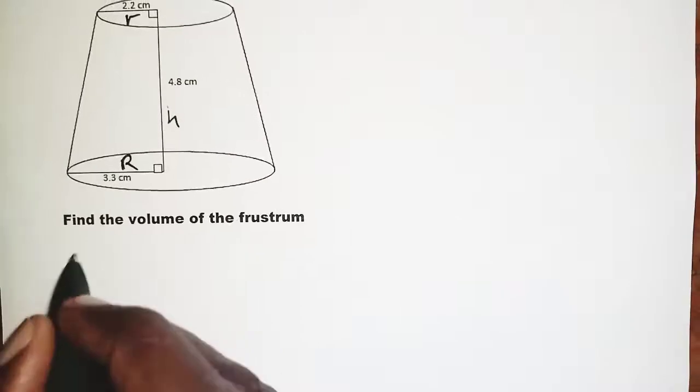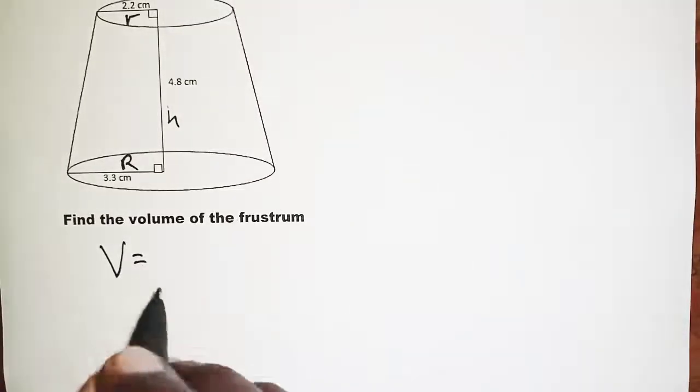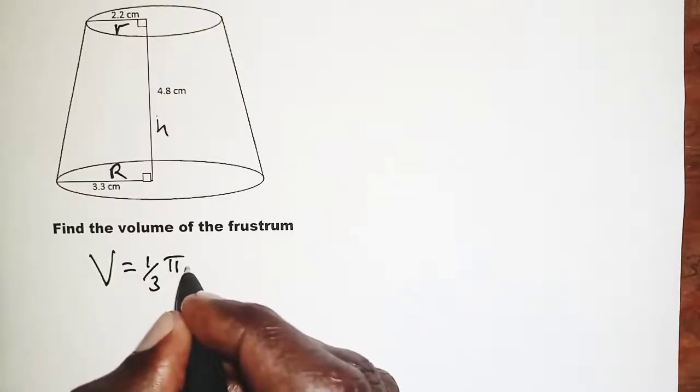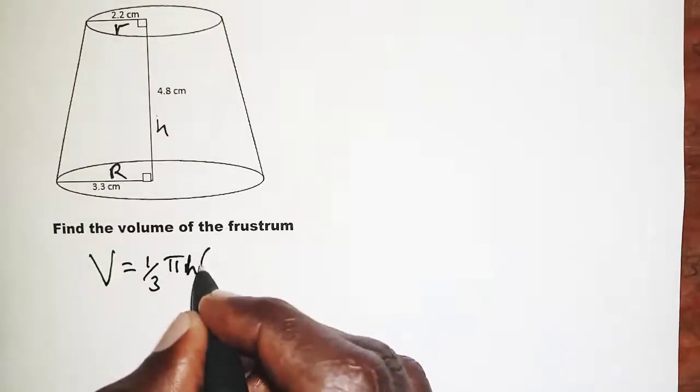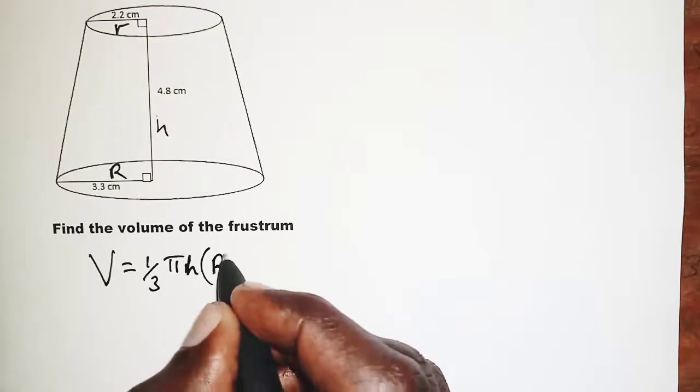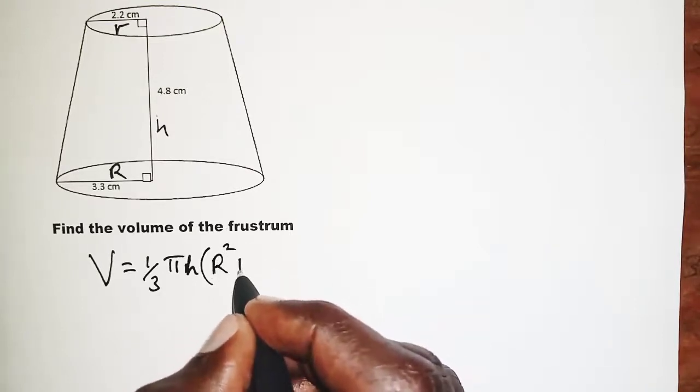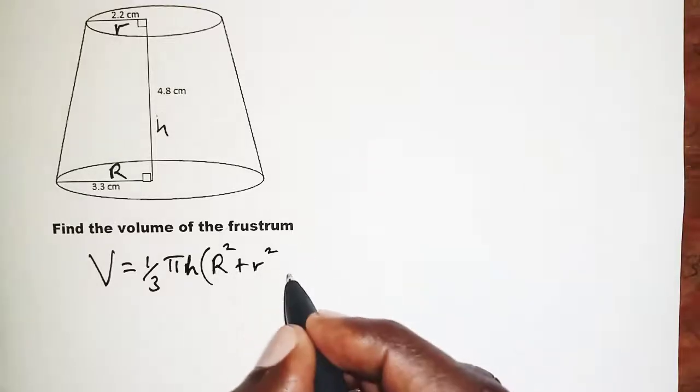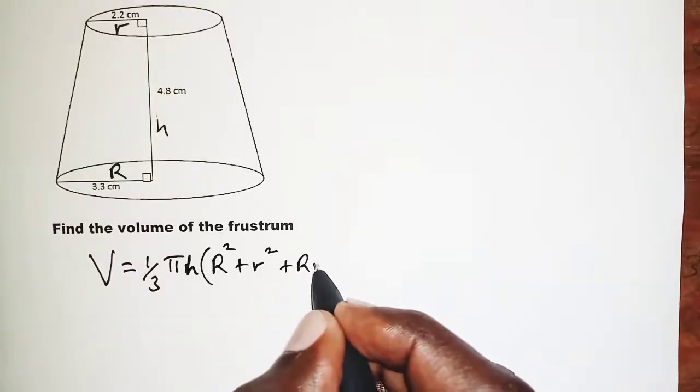We have volume of a frustum given by one-third pi h into R squared plus r squared. We know what these represent, plus R times r.